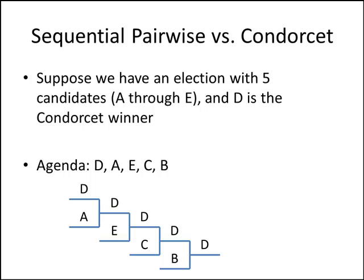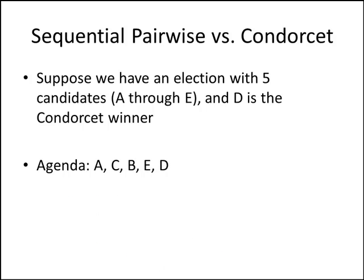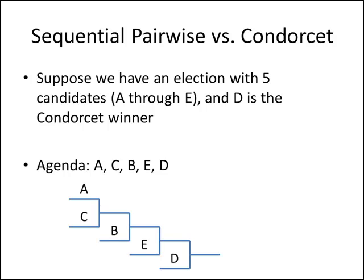What if we used a different agenda where D is towards the end? Let's try the agenda A, C, B, E, D. We can set up our brackets. Since all we know is that D is the Condorcet winner, we don't know who wins the A versus C election, and we don't know who wins the subsequent matchups. But whoever gets matched up against D in the last round is going to lose to D, since D is the Condorcet winner and beats all opponents in one-on-one matchups. So it doesn't matter which candidate gets to the last round with D — D will win. When we have a Condorcet winner, no matter what agenda you use, that Condorcet winner will be the sequential pairwise winner.